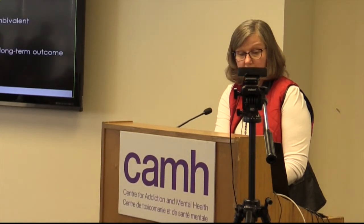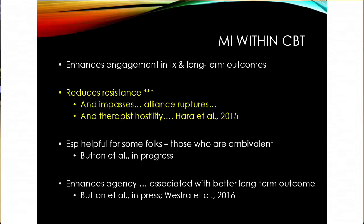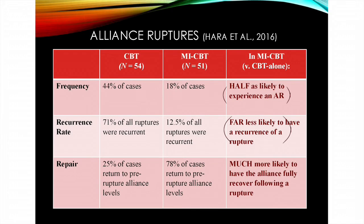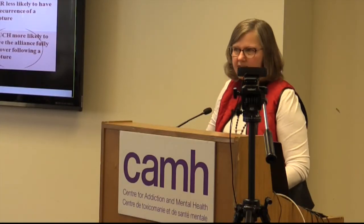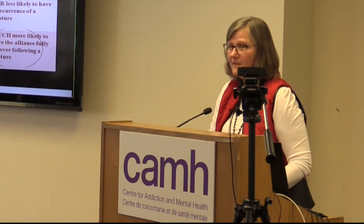MI reduces resistance - that's the key finding. In mediator studies asking what the heck is going on, it turned out that resistance was 86% of the reason the MICBT group did better in the long run - they were simply arguing less. In an alliance rupture study, the frequency of ruptures was roughly half in the MICBT group, and they were more likely to recover from them. In CBT alone, it was like an unhealed injury that keeps getting re-wounded - the resistance episode occurs, they switch topics, and it doesn't go away, coming back another time.